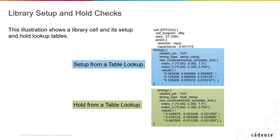The setup and hold checks are stored in your libraries — the .lib files — in the form of a lookup table. The lookup table contains the setup and hold values that are calibrated at several values of load and skew for each of the flops. The setup is shown as a positive value. The signal timing to the flop has to meet or exceed that setup value, which is done as a check at the capture flop during timing analysis. For the hold, the values are shown as a negative value. Both setup and hold have to be met for any particular capture flop to safely save the data into the flop.